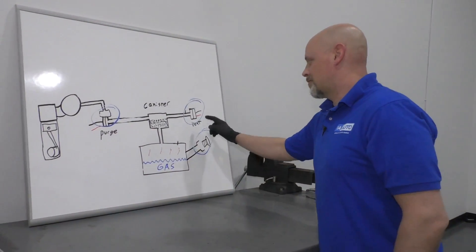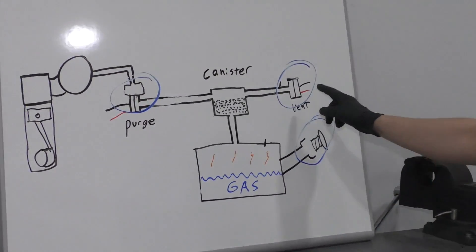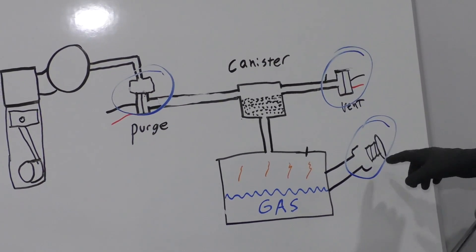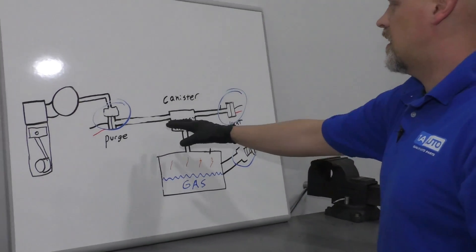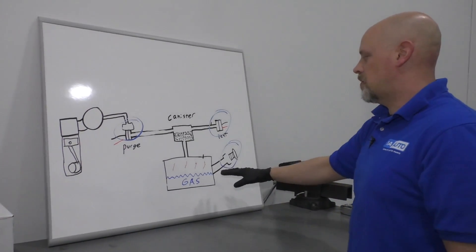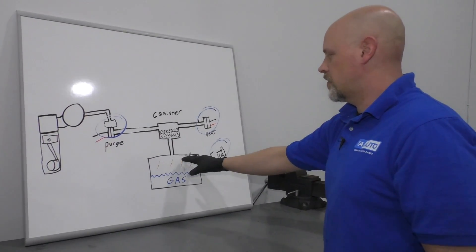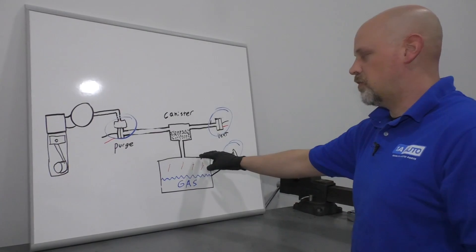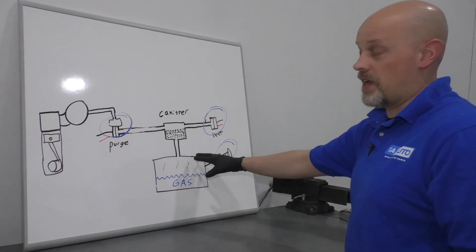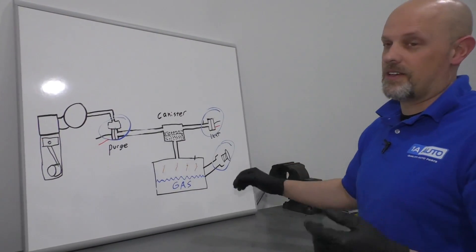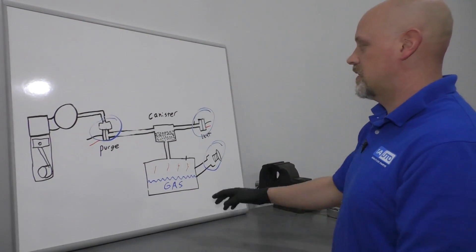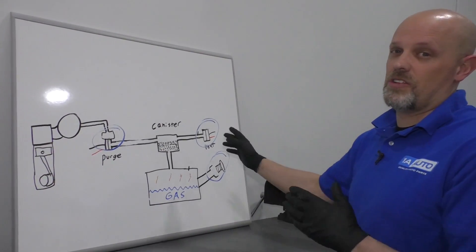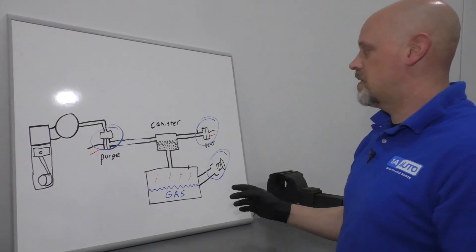These are the three most common problems: the purge valve, the vent valve, and the gas cap — those are the three moving parts. As for these other components, you could always have a leak in the gas tank if the fuel pump or anything is rusty. A lot of times those are going to leak, and it's hard to find a leak if it's not one of those items.